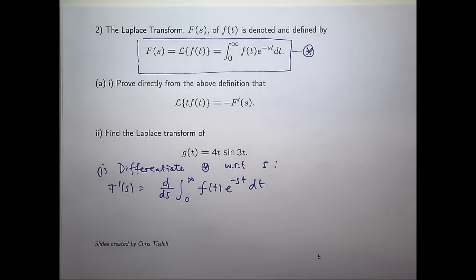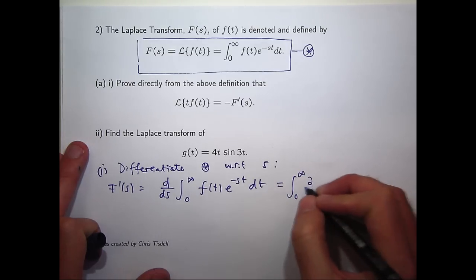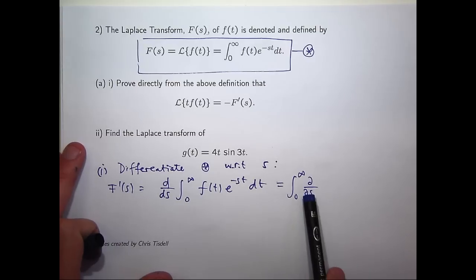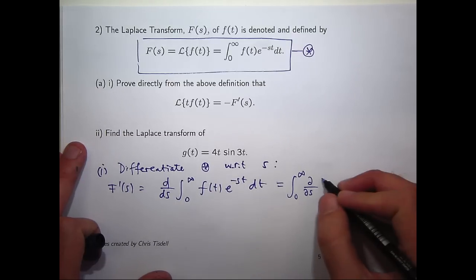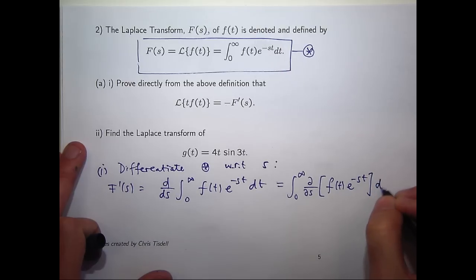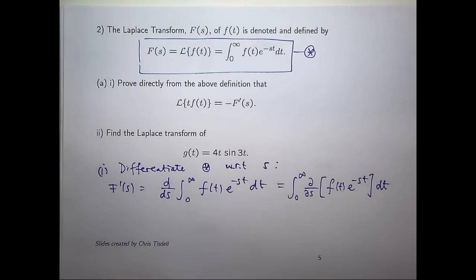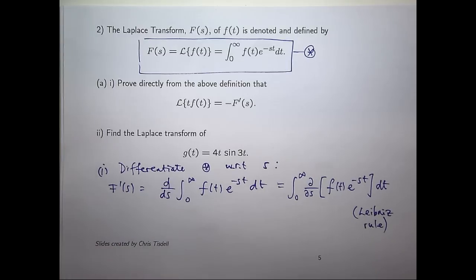This is a reasonably simple case. And for our purposes, we can sort of imagine that we can just move the d/ds inside the integral sign and change it to a partial. Now the reason that we change it to a partial is because what's in here is a function of two variables, s and t. So here we've used a special rule called the Leibniz rule.